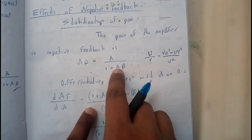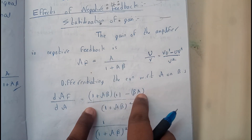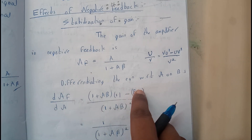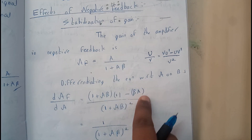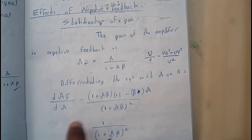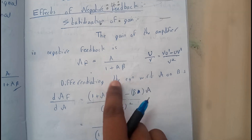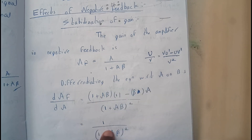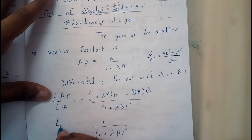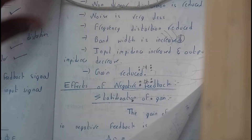Applying the u/v rule: denominator squared times (denominator times numerator derivative, which is 1, minus numerator times denominator derivative, which gives A·beta). Observing the numerator, the A·beta terms cancel out, and we get 1 divided by (1 plus A·beta) squared. So on the left side d(af)/dA equals 1 by (1 plus A·beta) squared.